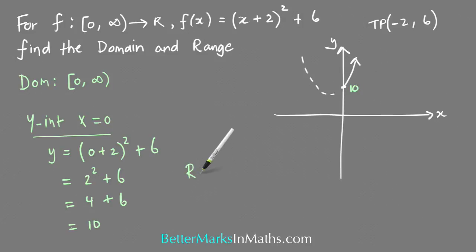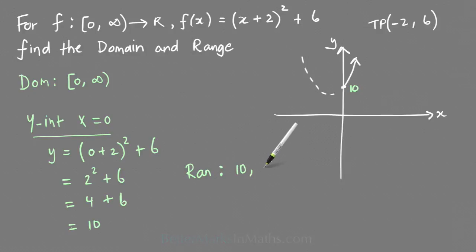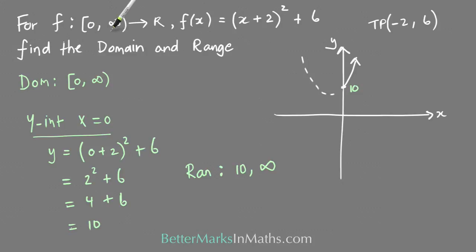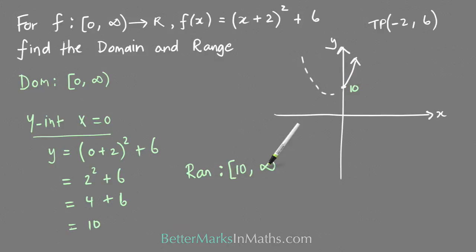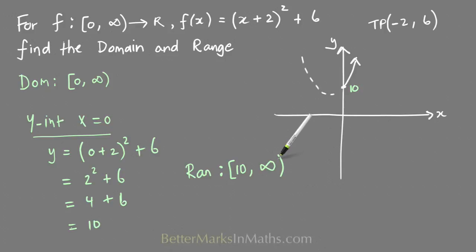So that value on the graph is 10, which means the range is from 10 to infinity. The 0 in the domain is included with a square bracket, so that means 10 is included in the range with a square bracket. Infinity never has a square bracket.